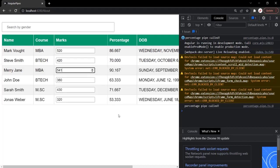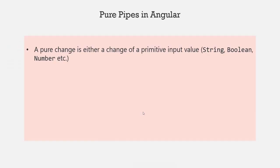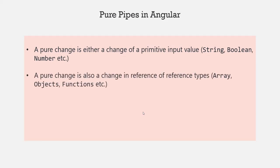A pure change is also a change in reference of reference types like array, object, functions, etc. Let's understand this with an example.